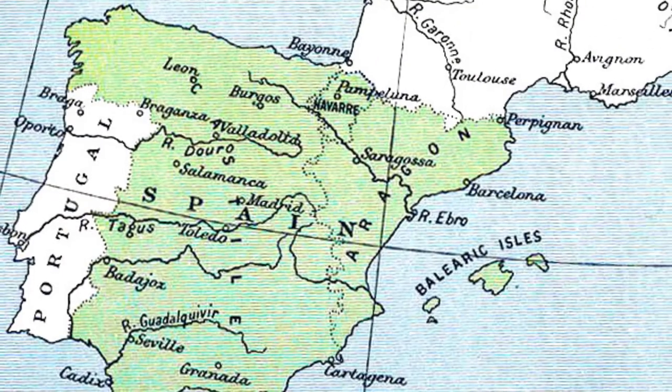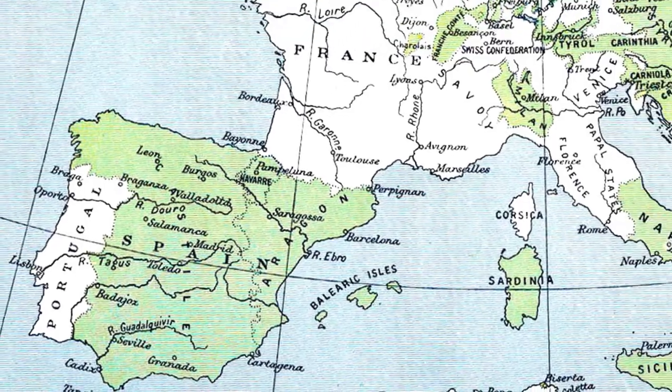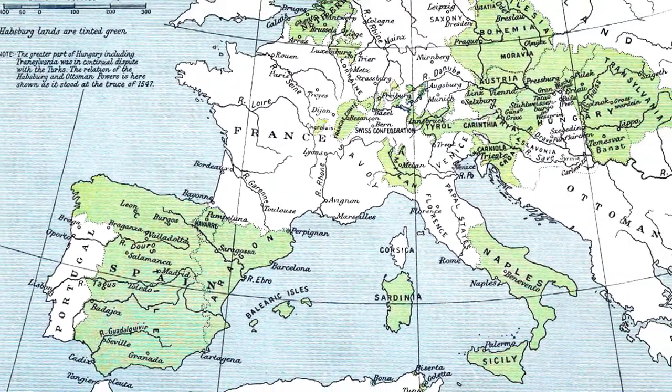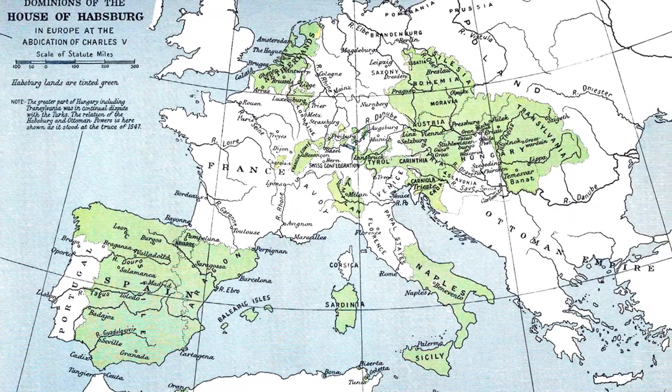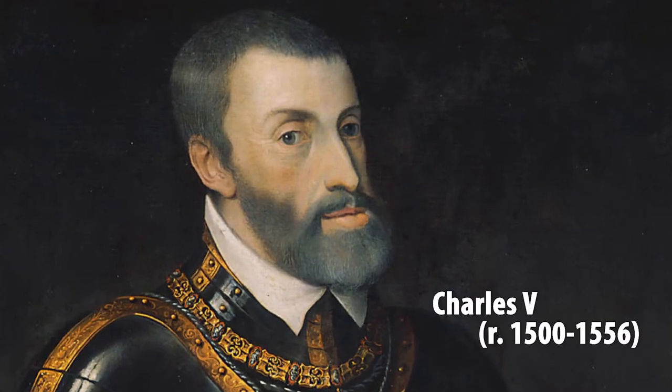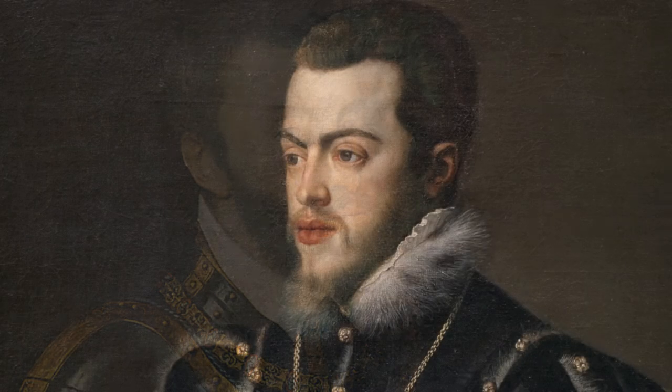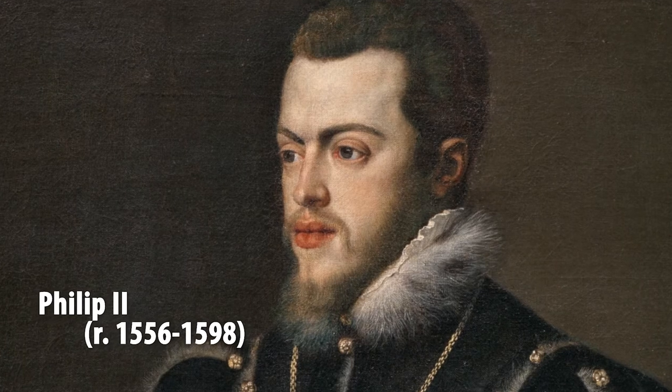The ruling family in Spain, the Habsburg family, also controlled other territories in Europe, such as Austria, Bohemia, the title of the Holy Roman Empire, the Netherlands, and some Italian states. This made Spain, under 16th century monarchs such as Charles V, who ruled from 1500 to 1556, and his son Philip II, who ruled from 1556 to 1598, extremely powerful. Charles V and Philip II had a vast empire and vast resources at their disposal.